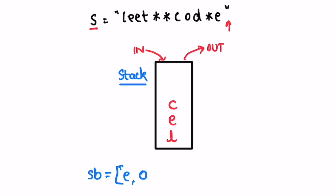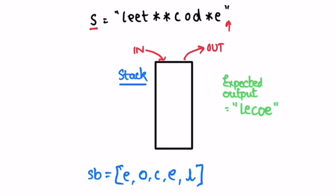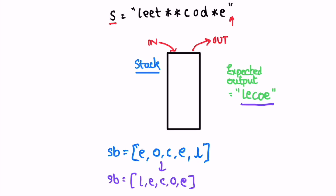Continue checking — stack is not empty, so keep adding topmost elements to the string builder: 'c', then 'e', then 'l' are removed and added. Now the stack is empty and we have our output inside the string builder. However, it is reversed compared to the expected output, so we reverse the string builder using the reverse method. After reversing and converting the string builder into a string using toString, it matches our expected output and is returned.